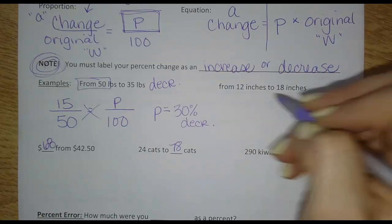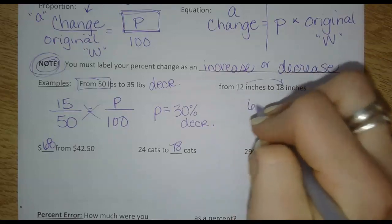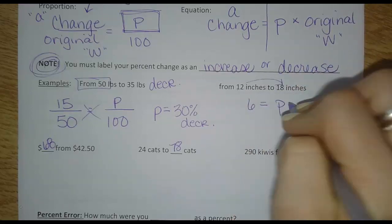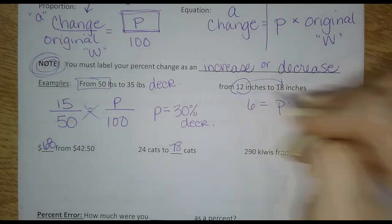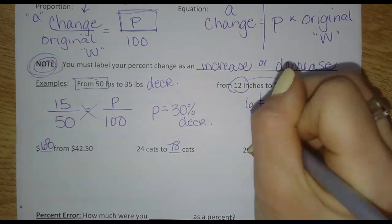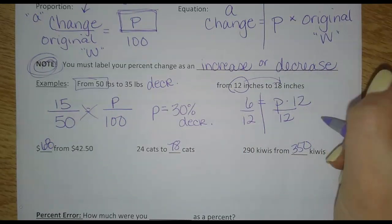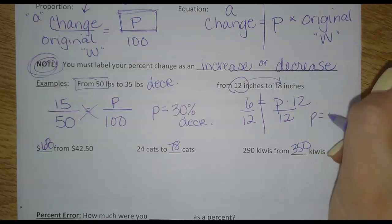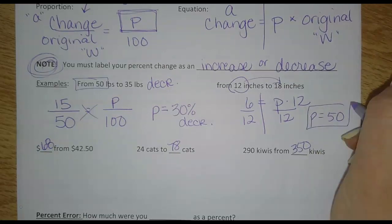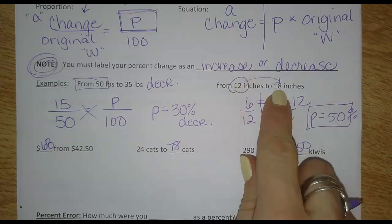This one I'll do the equation. If it goes from 12 to 18, well, that's a change of six. And then P times the original number, 12 was the original number. And now when I solve to get P by itself, I get that P is 50 percent or 0.5. And then I need to label it as percent increase because it got bigger.